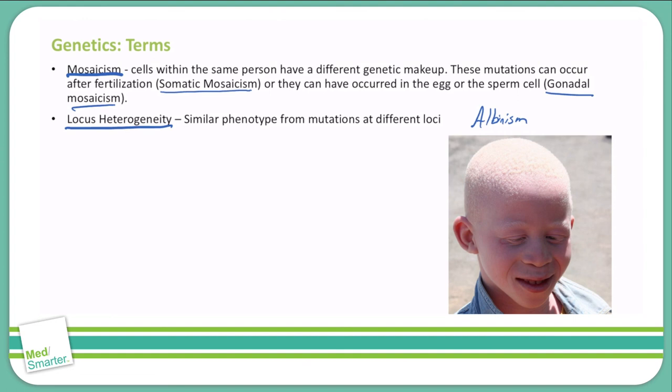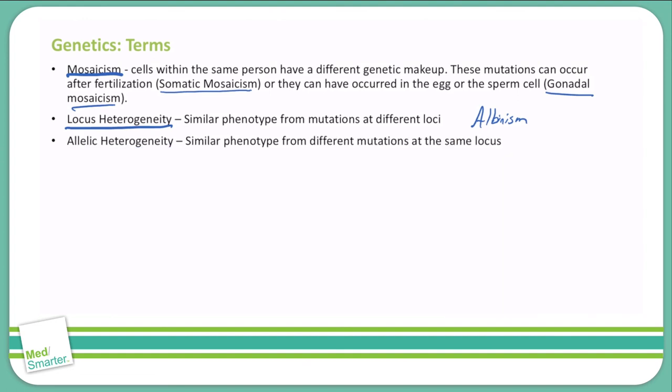Allelic heterogeneity is a similar phenotype arising from different mutations at the same locus. An example here is beta thalassemia — you can have a different coding mutation, but it causes the same beta thalassemia.